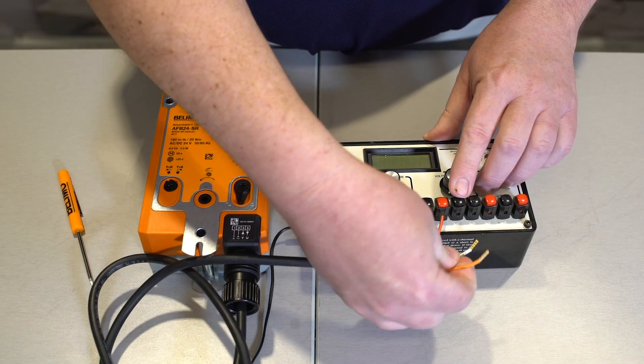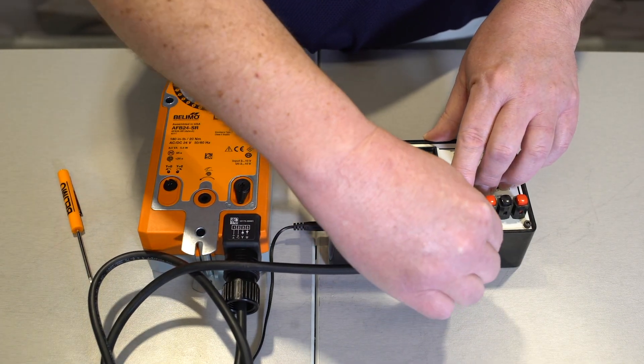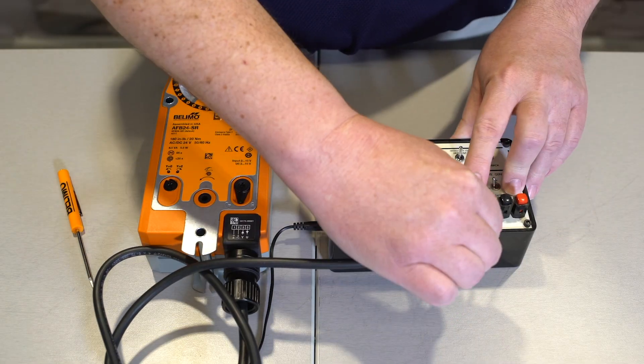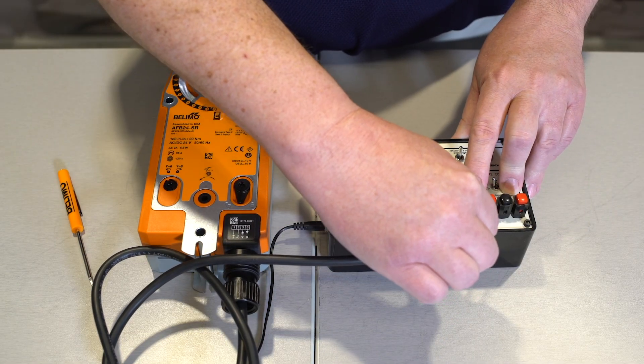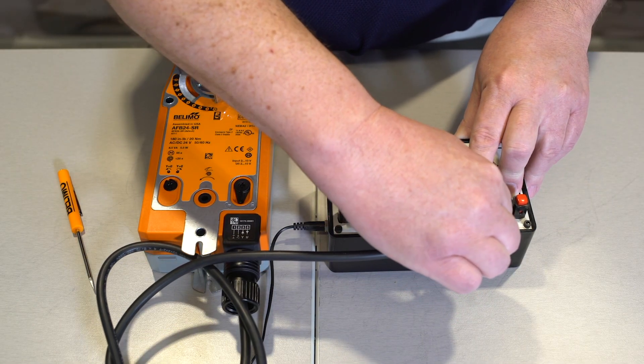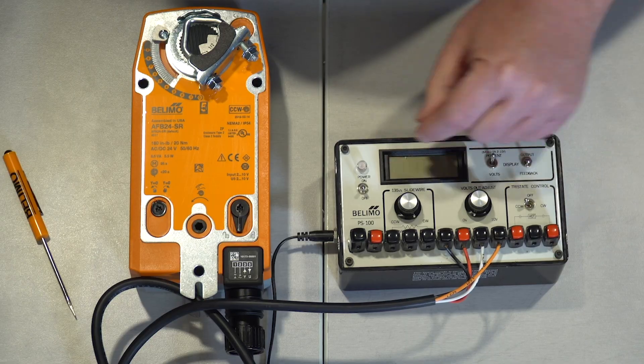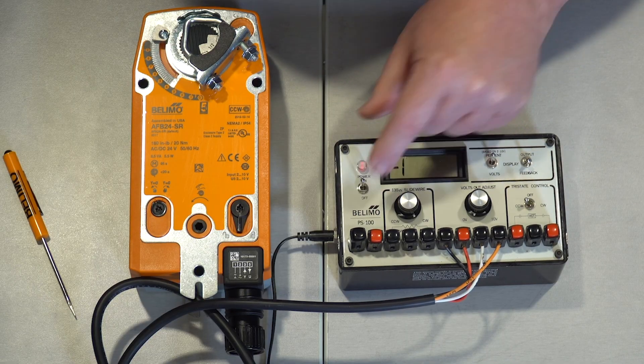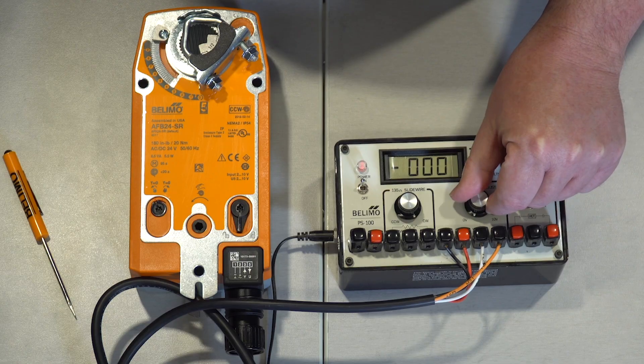The white wire will be connected to our control output, which provides 2 to 10, and the orange wire will be connected to our feedback. When wired in this way, the actuator will respond to a 2 to 10 control signal.